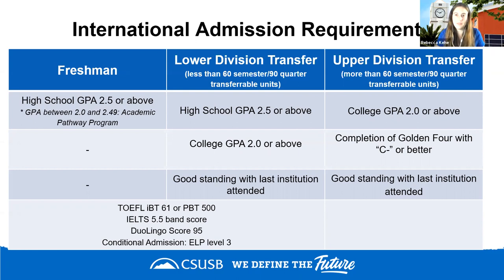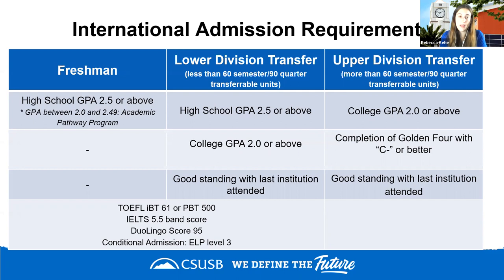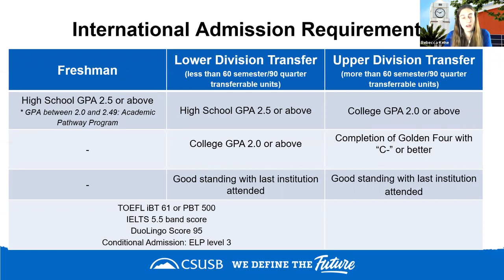Students in the Academic Pathway Program cannot take more than 12 semester units per term and must work with an academic coach — a professional staff member who helps them access campus resources and tutoring. After the first year, if students achieve a 2.75 GPA or higher, they graduate from the program, no longer need the academic coach, and can enroll in as many courses as they want.